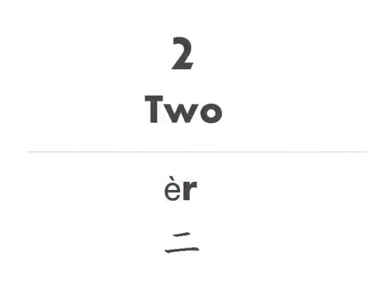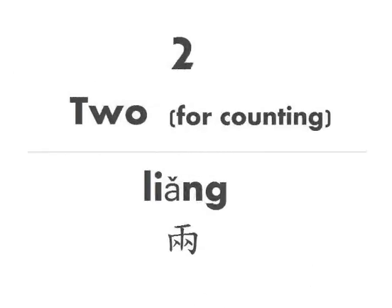2 is a fast falling tone. Try to imitate my tone as closely as possible: er. Another way of saying the number 2 is liang. This is a falling rising tone. You will use this form of 2 when you're counting objects, including money. Say again: liang.